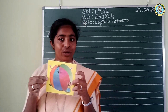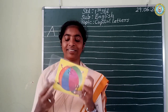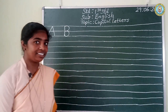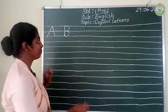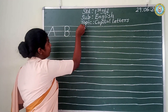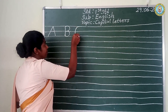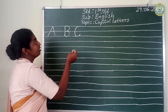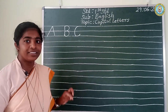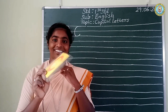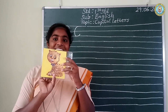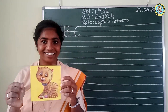Look at the ball. Do you all like to play with the ball? Yes, we all like to play with the ball. Which is the next letter, children? Yes, C. C for cat. C for cat. Do you all like to play with the cat? Yes, we all like to play with the cat.